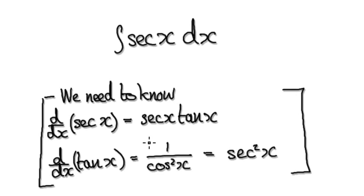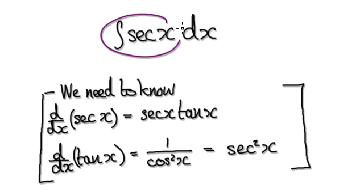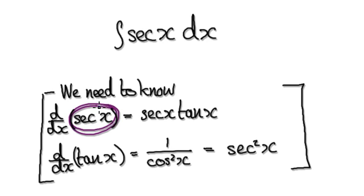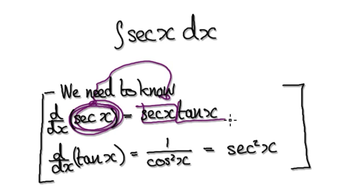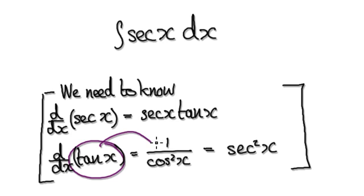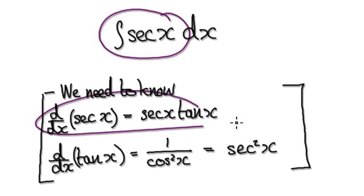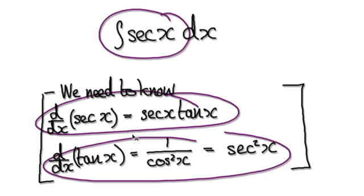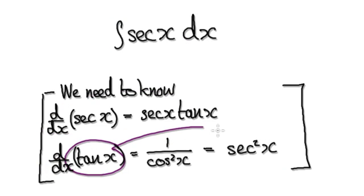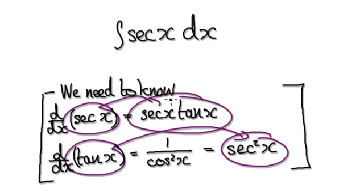Now we're going to try and integrate secant of x. In order to do that, we need to know two things: differentiating tan of x gives secant squared of x, which we can also write as secant of x times secant of x. And differentiating secant of x gives secant of x times tan of x, as we just saw.